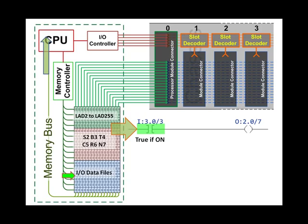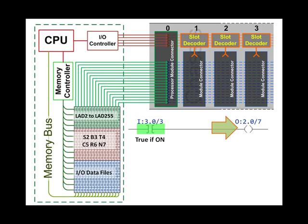The logic is solved from left to right, so the processor looks at the next instruction. It is a write instruction, not a read instruction. So instead of reading the state of the memory location that this instruction is addressing, we will write to that memory location with the state of the logical rung. So the rung is true — we are going to write a 1 to memory location O:2/7. First by activating that word by way of the memory controller and then by sending the state of the bit to that bit in memory.